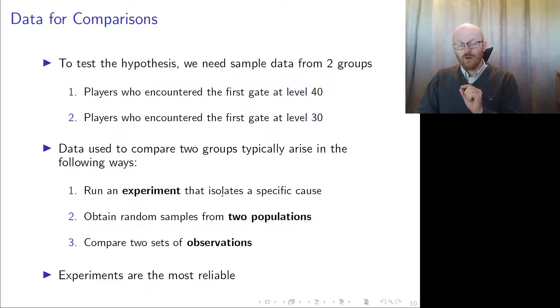You hold everything else equal among the subjects, among the two samples. You can run an experiment, or you can obtain random samples from two populations, which means you sample at random from players who encounter the first gate at level 40 and players who encounter the first gate at level 30.